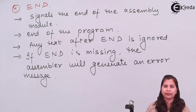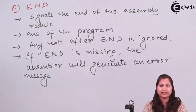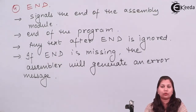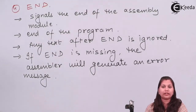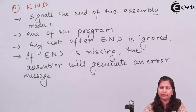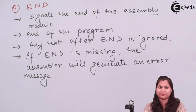These are the assembler directives which involve no opcode generation and no machine code generation. They direct the assembler on what operations it has to perform. I hope this topic is clear to you. Thank you.